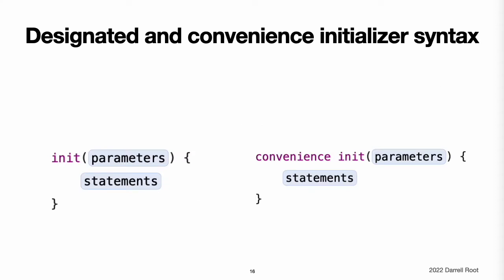Syntax for designated and convenience initializers. Designated initializers for classes are written in the same way as simple initializers for value types. Convenience initializers are written in the same style but with the convenience modifier placed before the init keyword separated by a space.